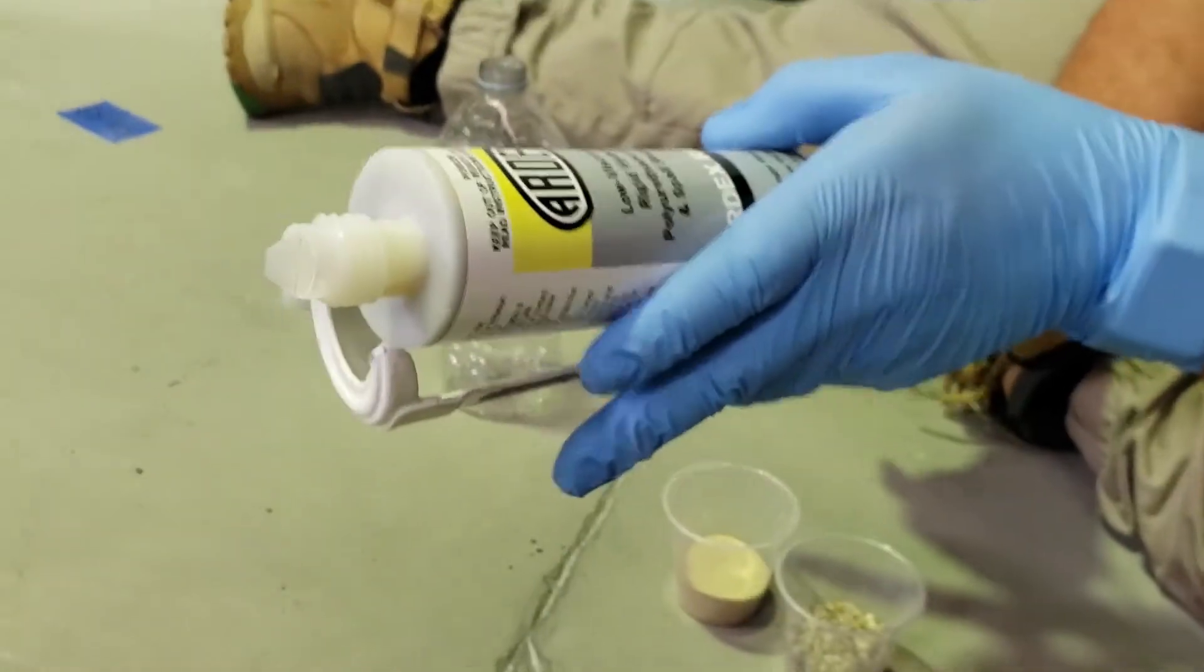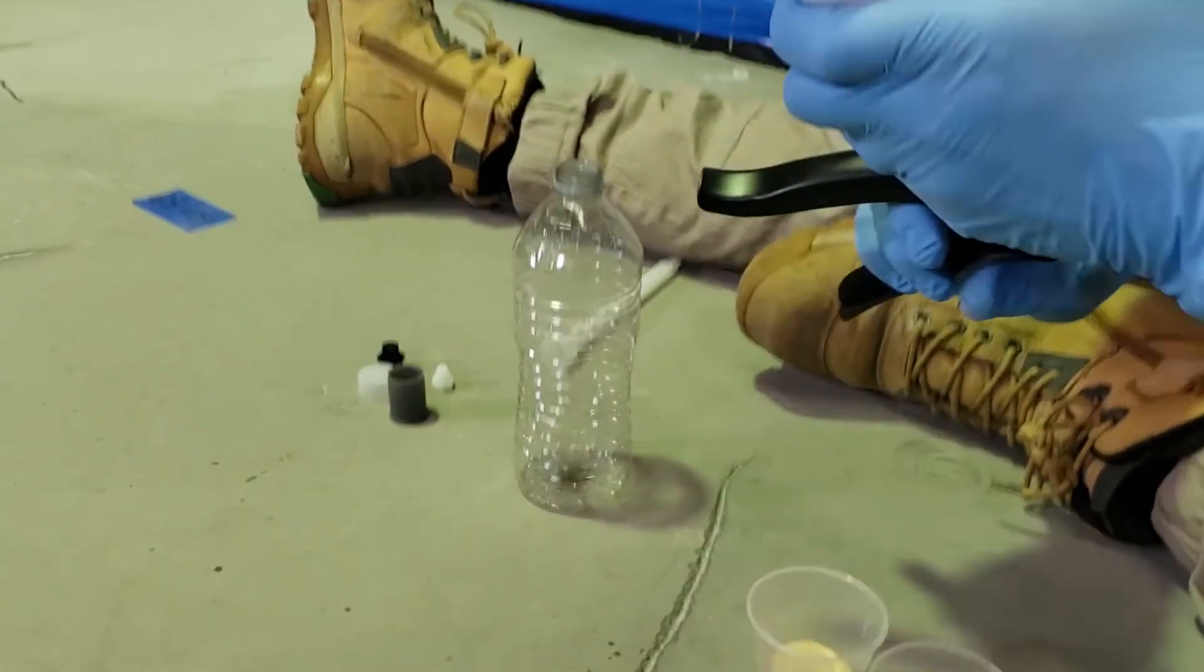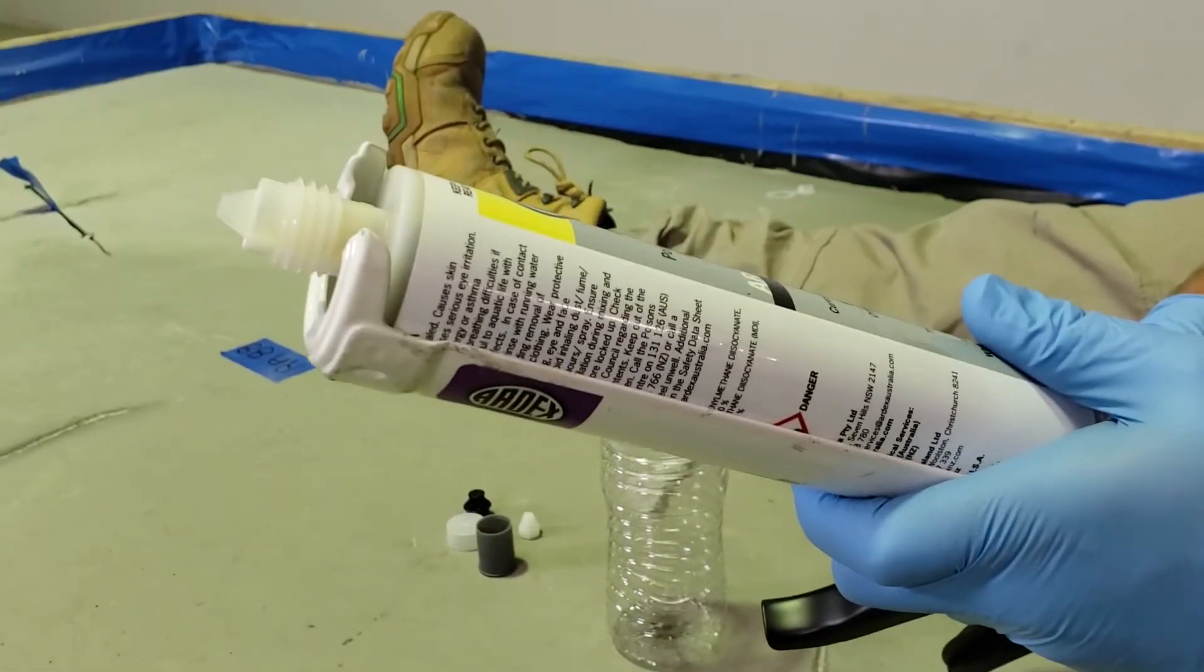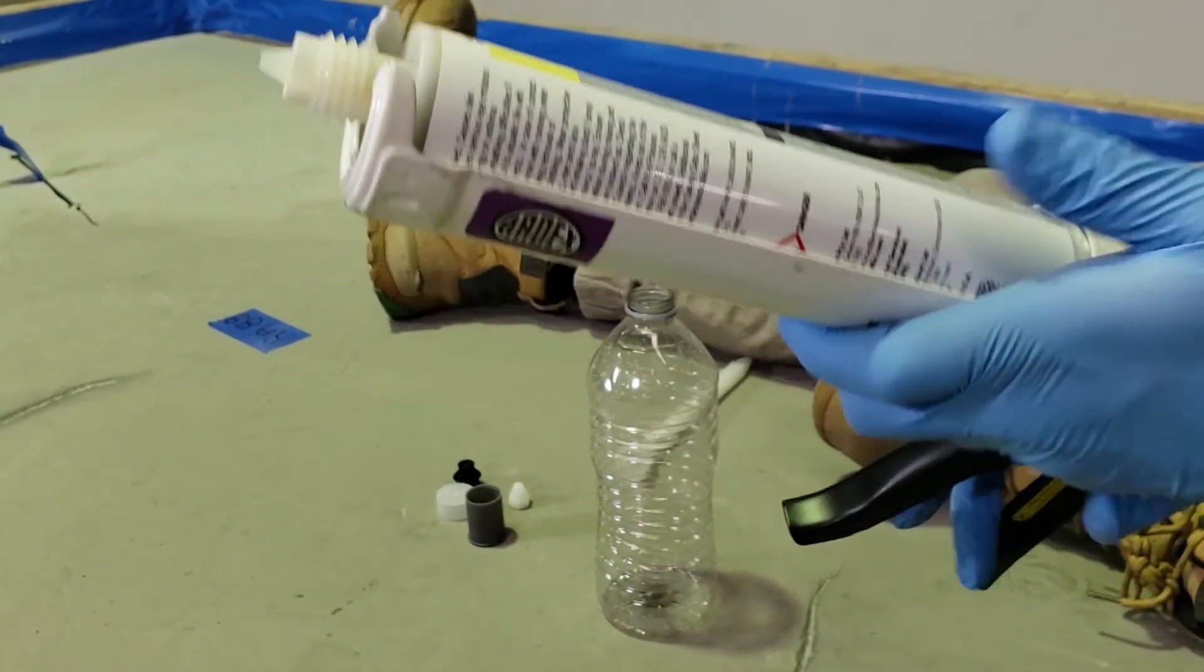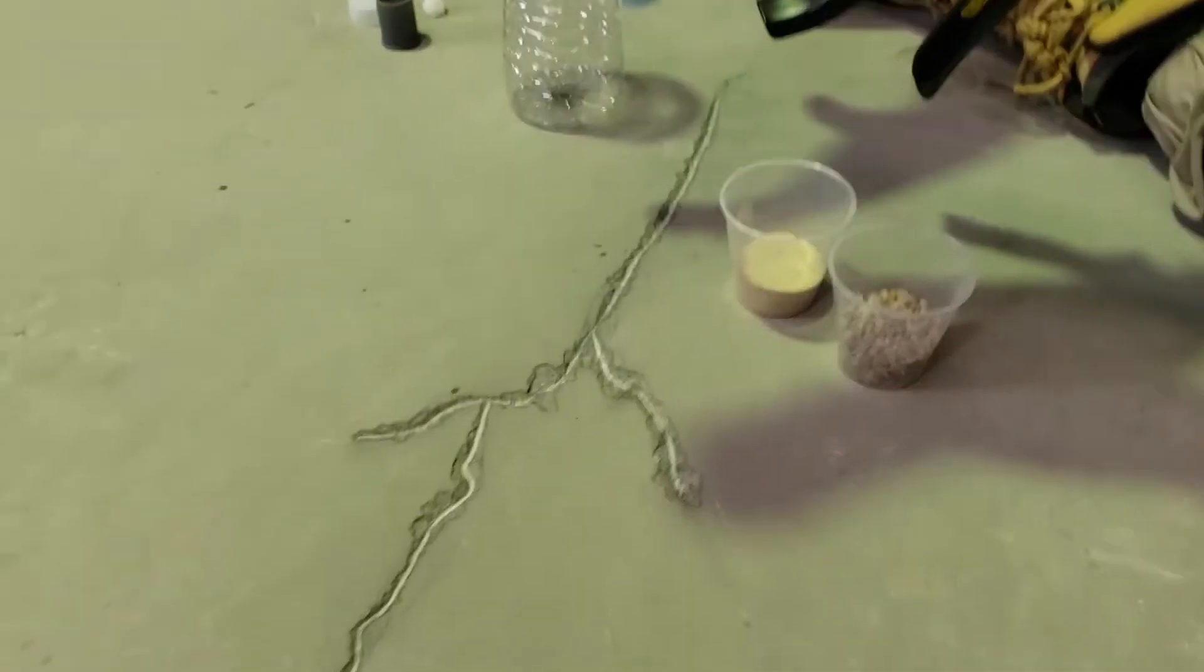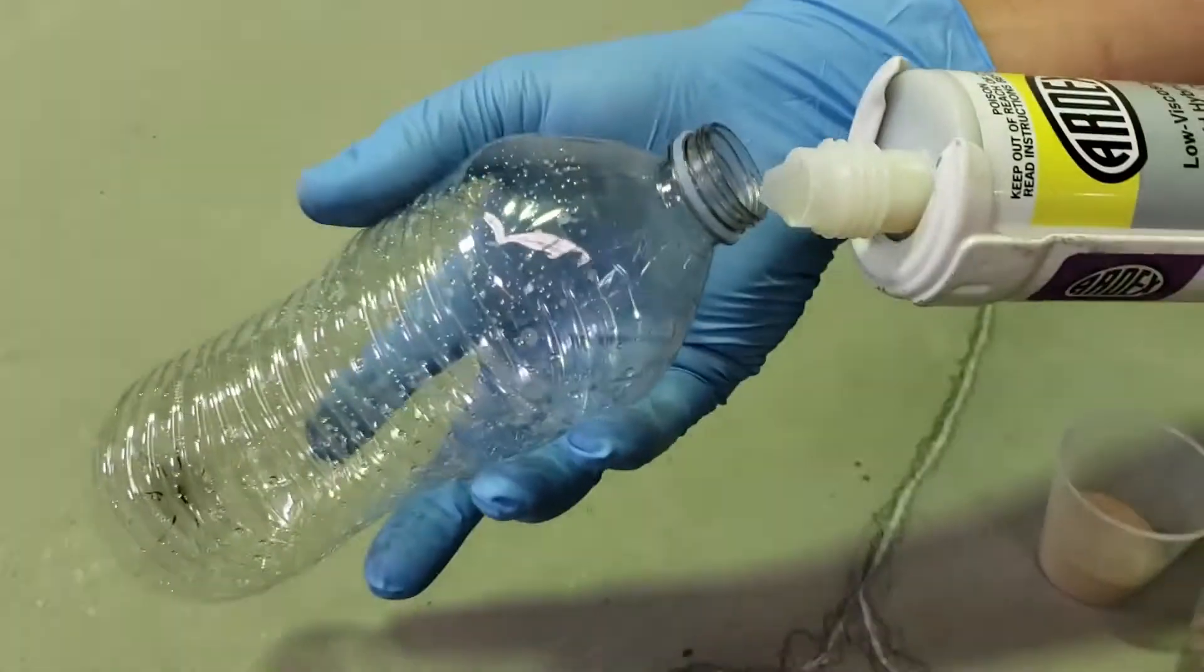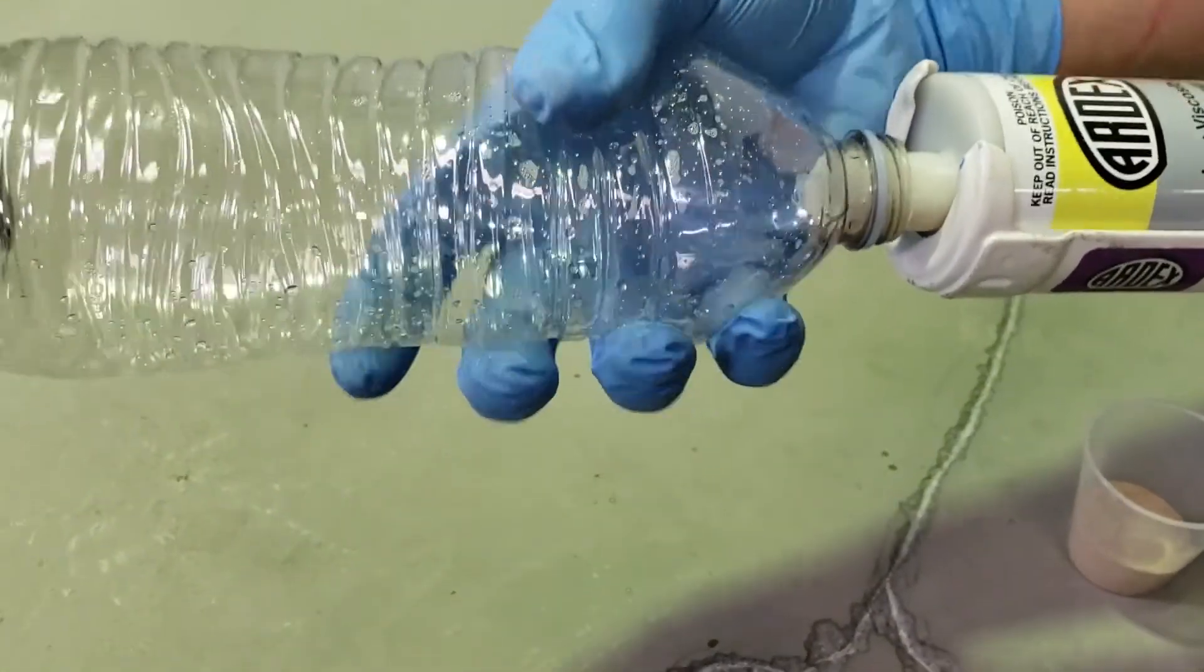So when you want to decant the RA-56, you want to be making sure that you've placed the cartridge into the medium to heavy-duty caulking gun. What I'll then recommend is getting yourself an empty water bottle, placing the empty water bottle over top of the cap like so, so it's a nice tight fit.